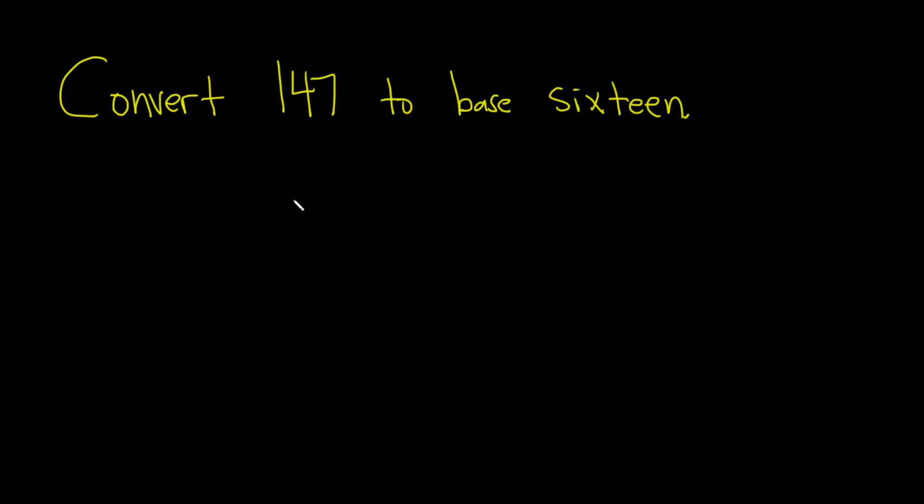In this video, we're going to convert the number 147, which is in base 10 or decimal form, to base 16. The way we're going to do that is we're going to repeatedly divide by 16 and write down the remainders.